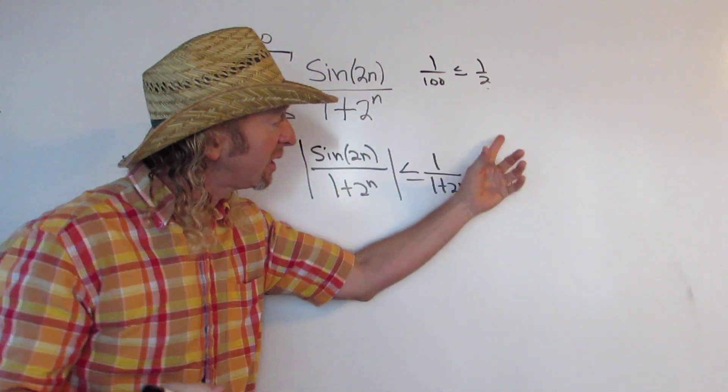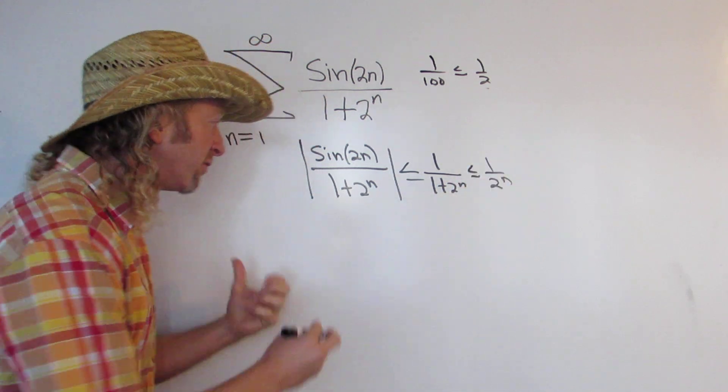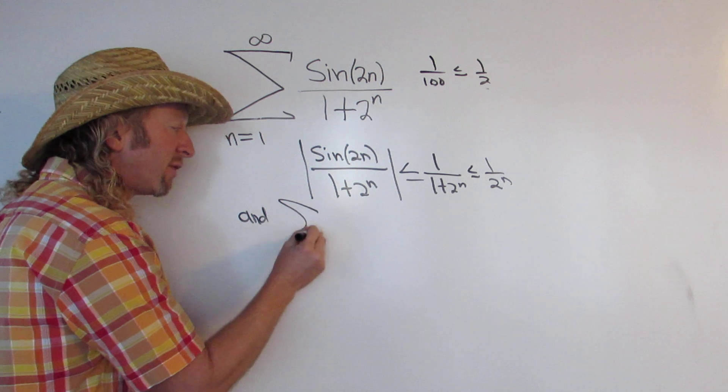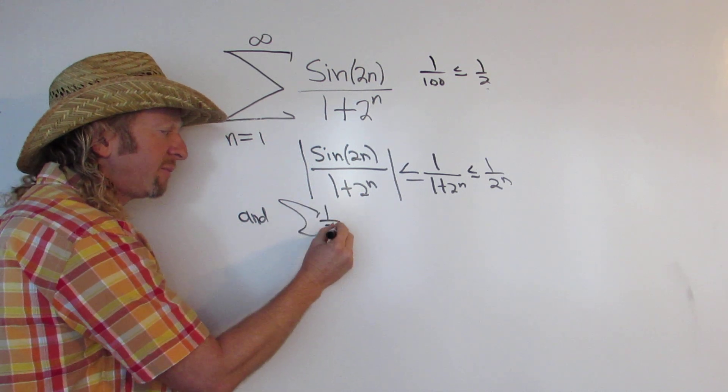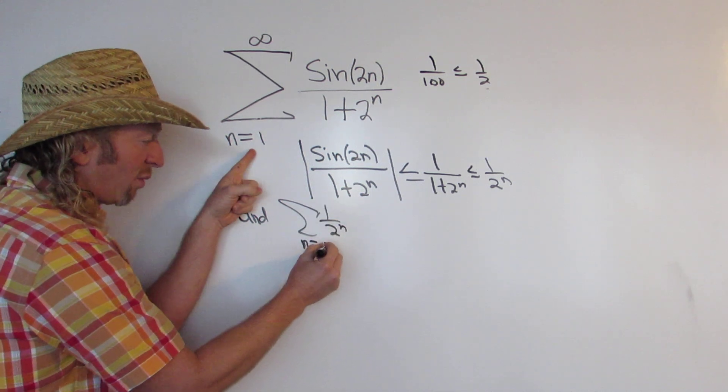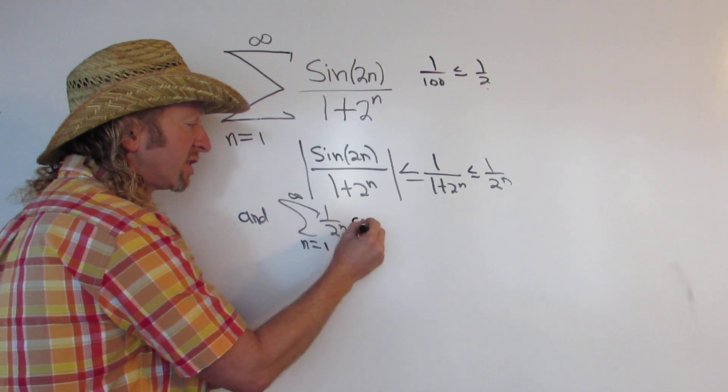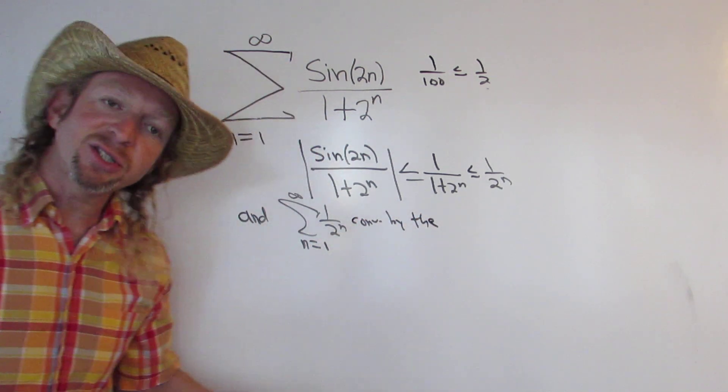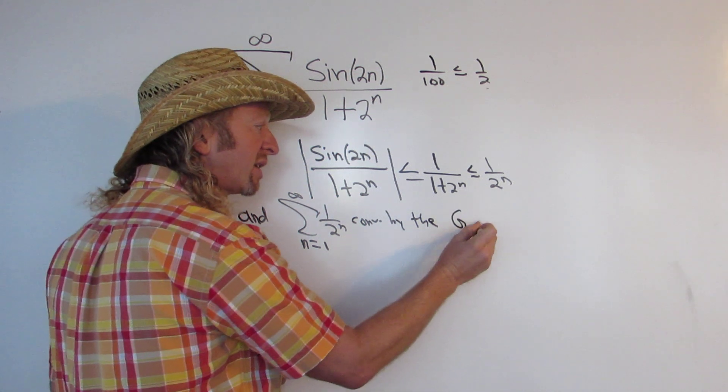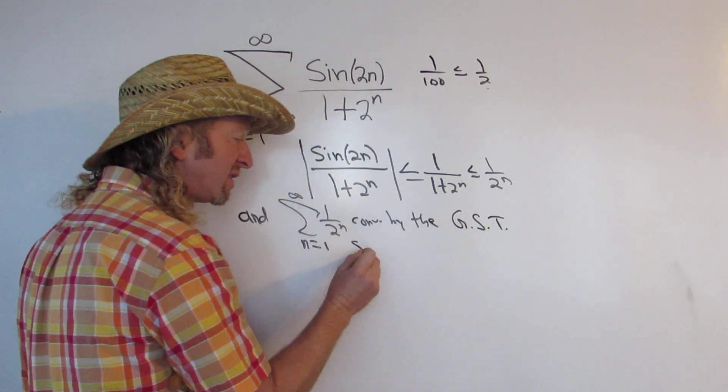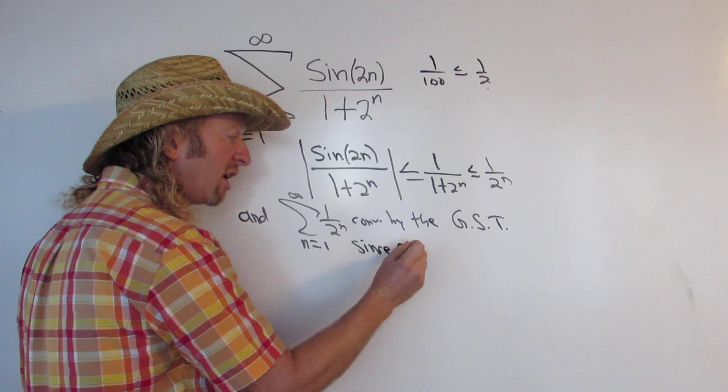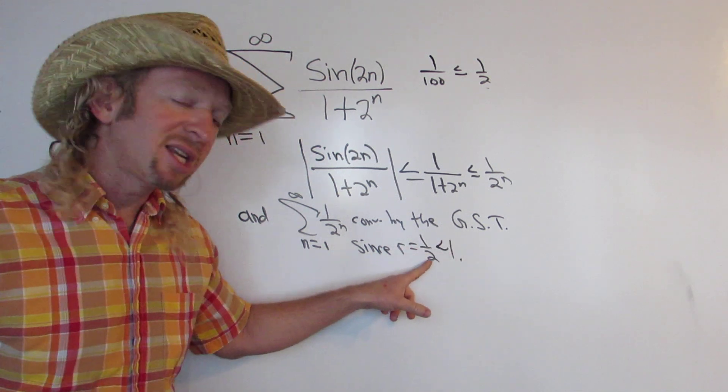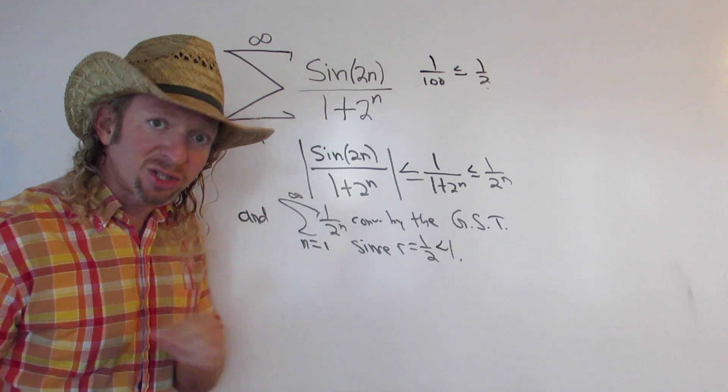Now we have to explain why the sum of these guys converges. And we'll explain why this converges. So 1 over 2 to the n, n equals 1 to infinity. This converges by the, this is a geometric series. So I'll just say it converges by the geometric series test. Since r, here r is 1 half and in absolute value is less than 1. Notice I didn't take the absolute value because it's already positive.